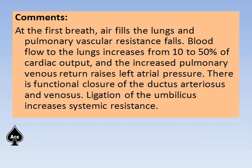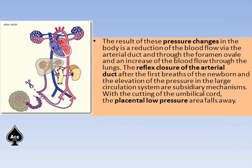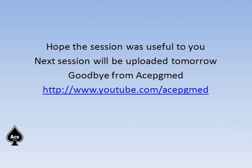Ligation of the umbilicus increases the systemic resistance. The circulatory system diagram is shown here — you can use the pause button to read the text, which explains all the changes that occur at delivery. Hope this session was useful to you, and the next session will be uploaded tomorrow. Goodbye from ACPGMED.